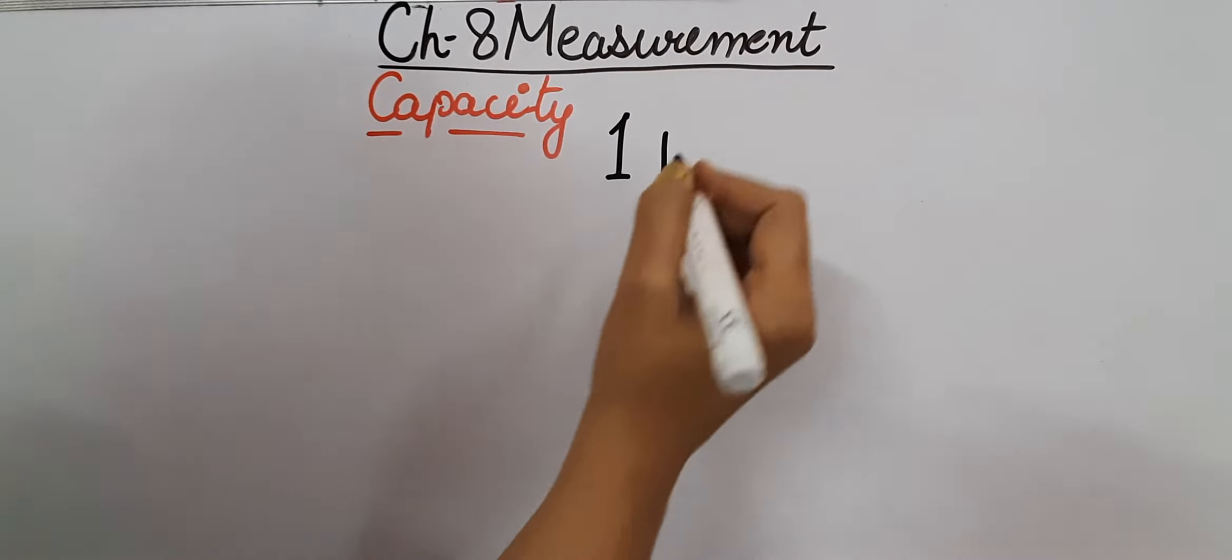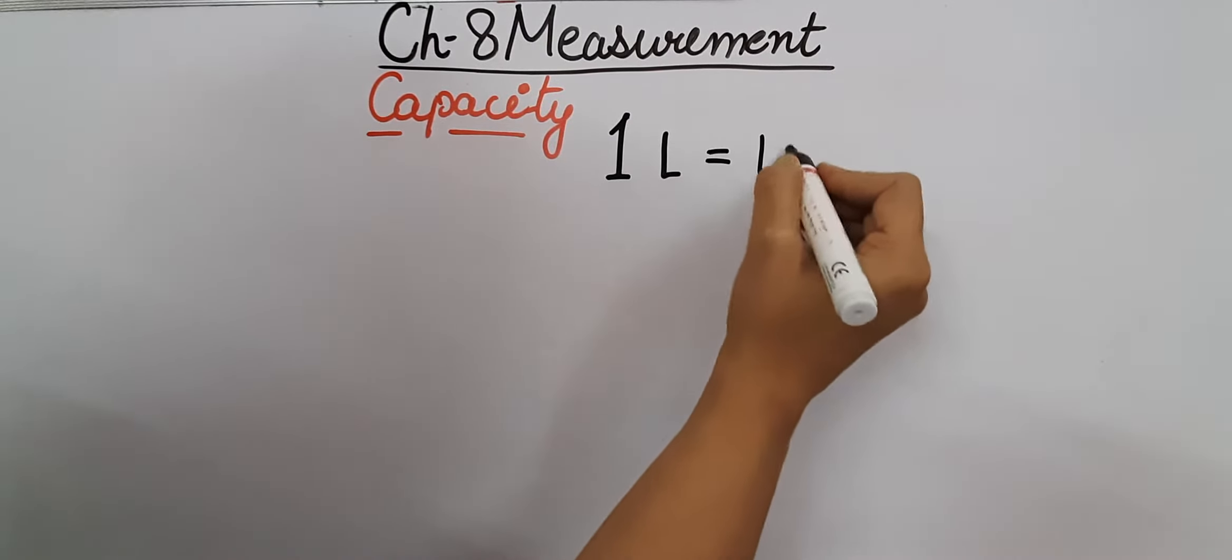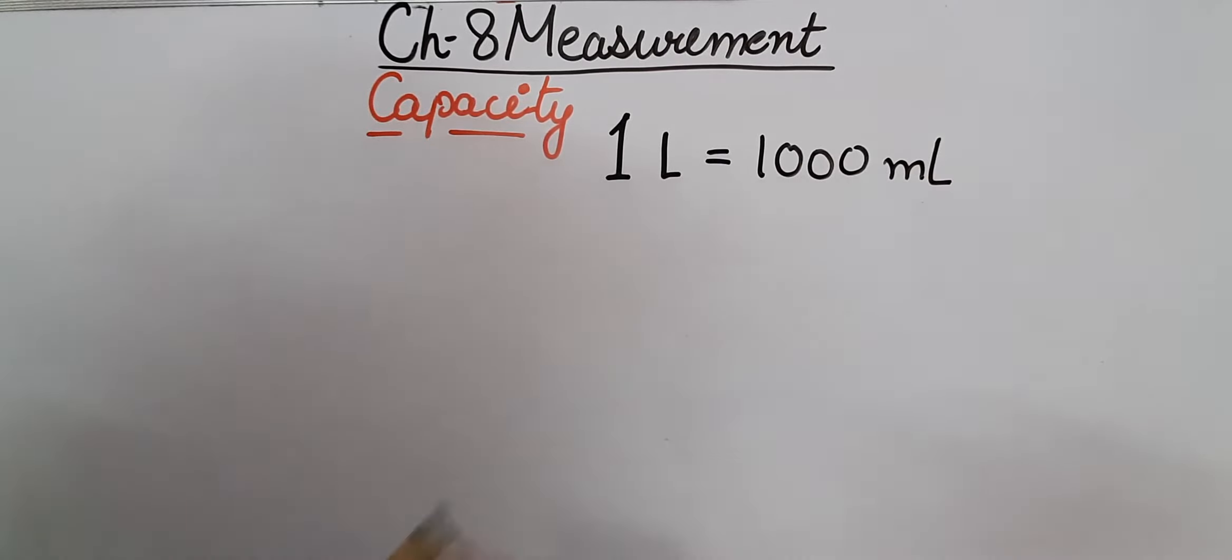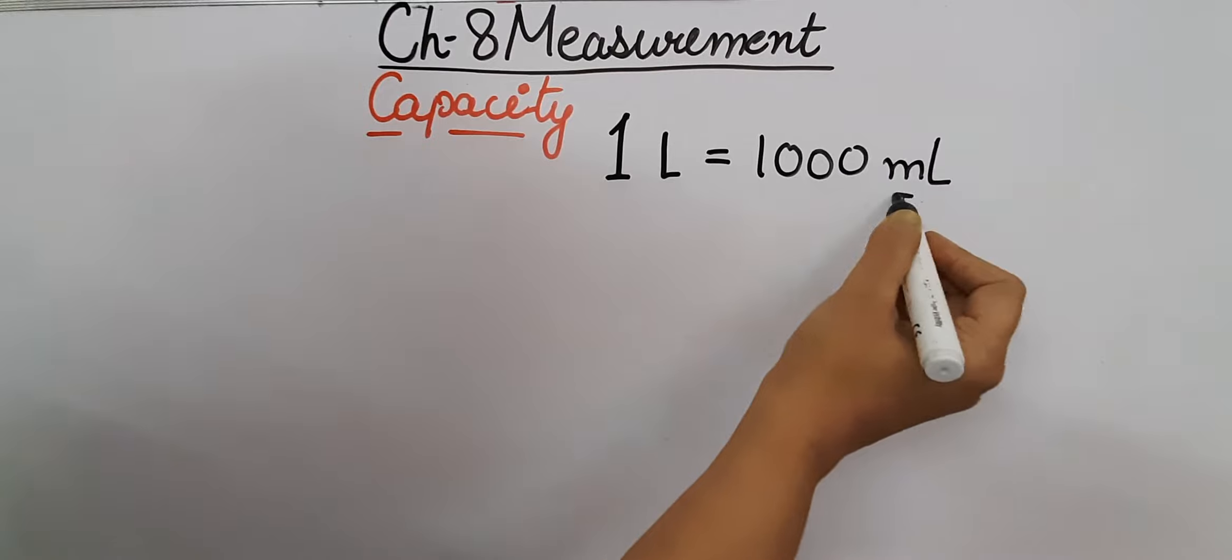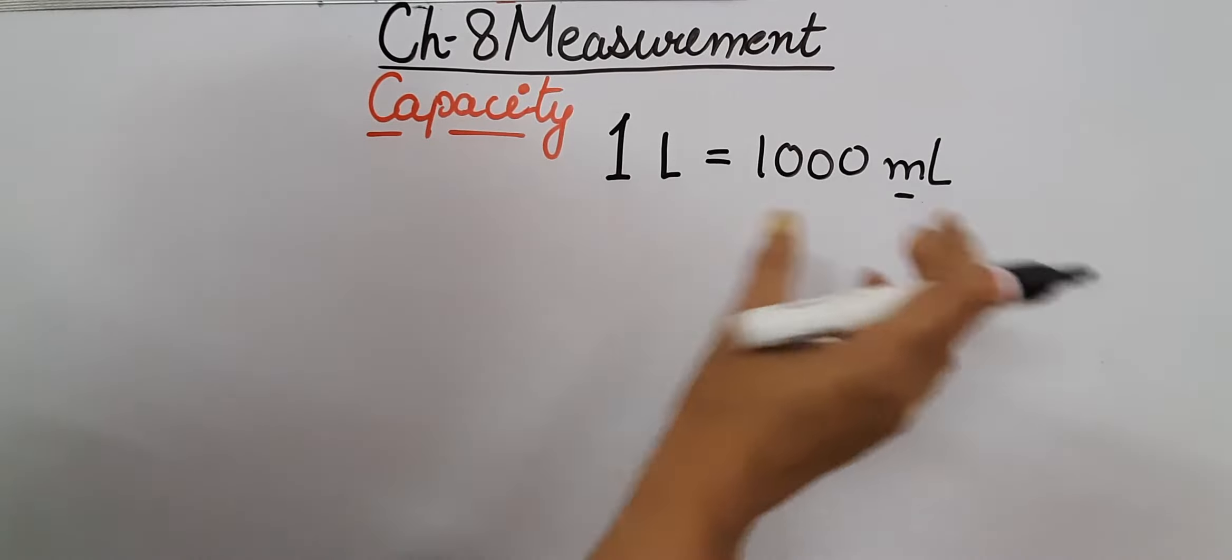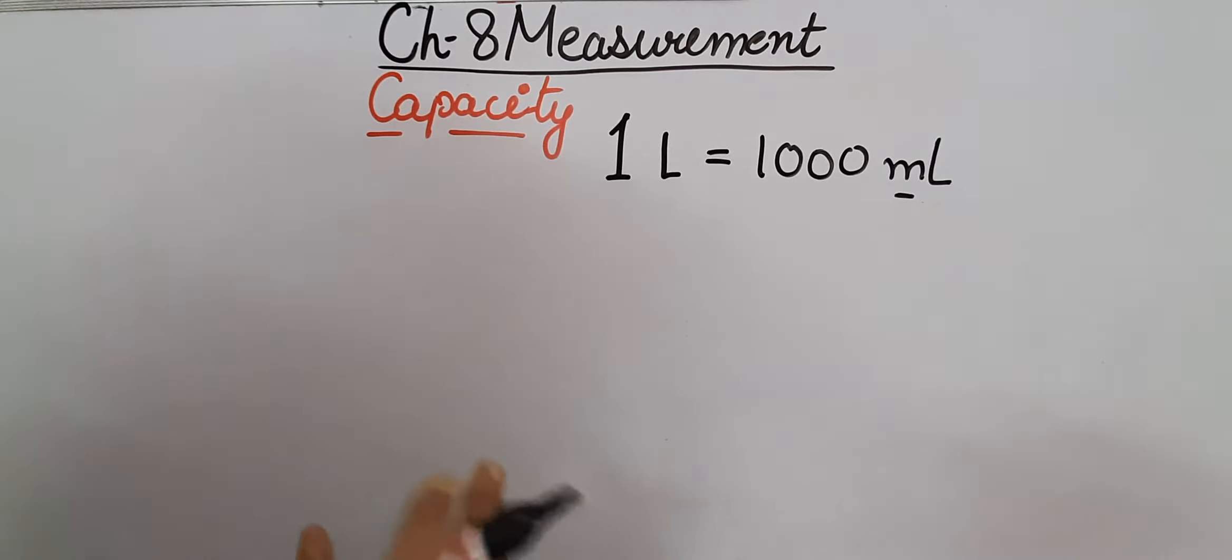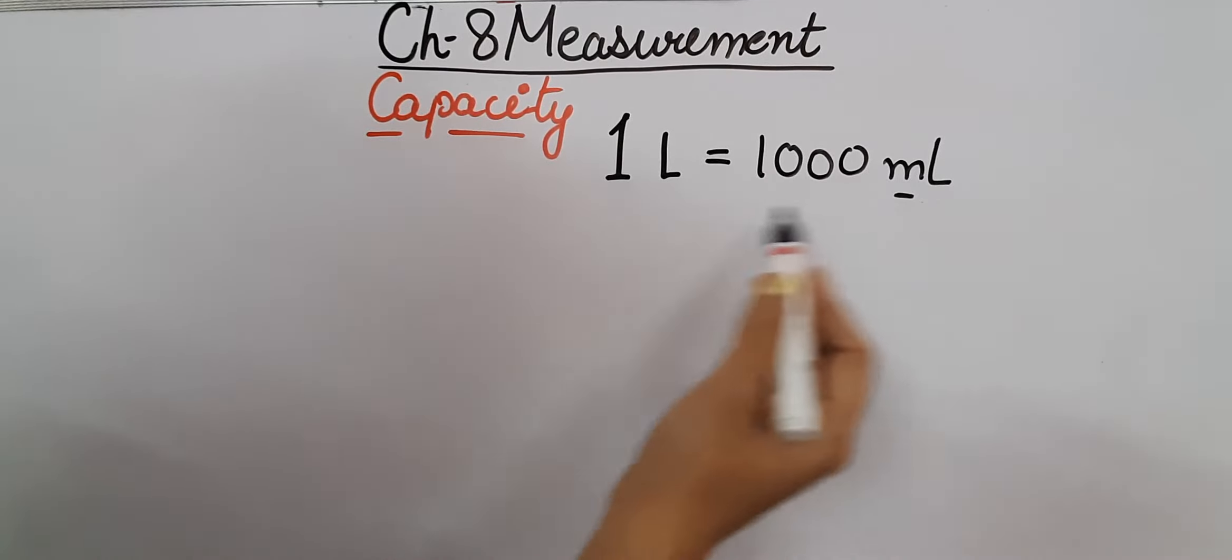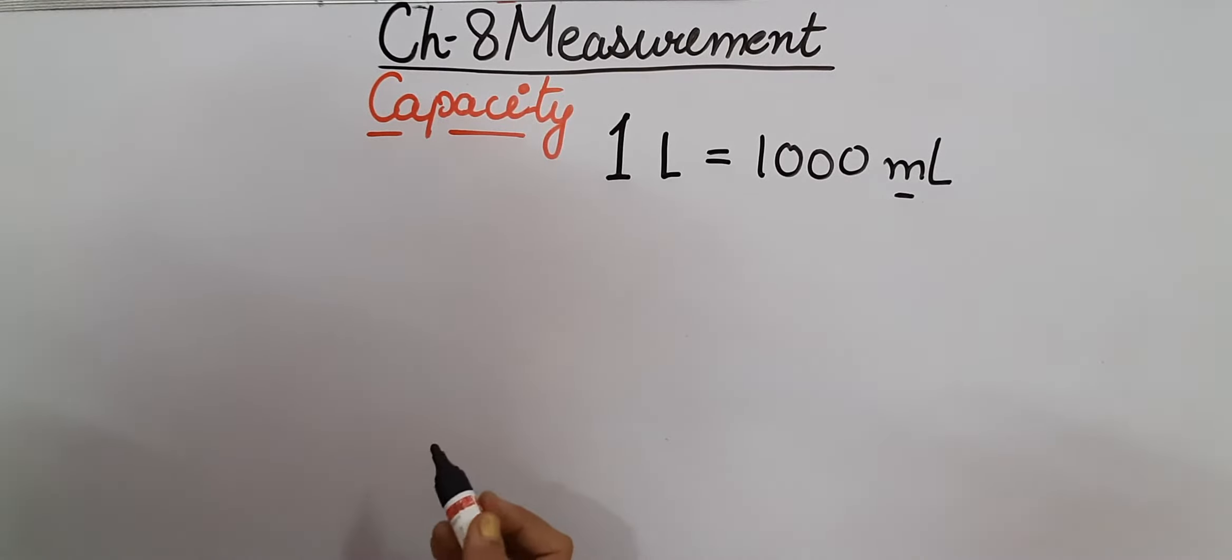One liter equals 1000 milliliters. Here in milliliters, milli means 1000, that is one part out of 1000 parts. So milliliter means one-thousandth of a liter, and we have denoted it like this: one liter equals 1000 milliliters.